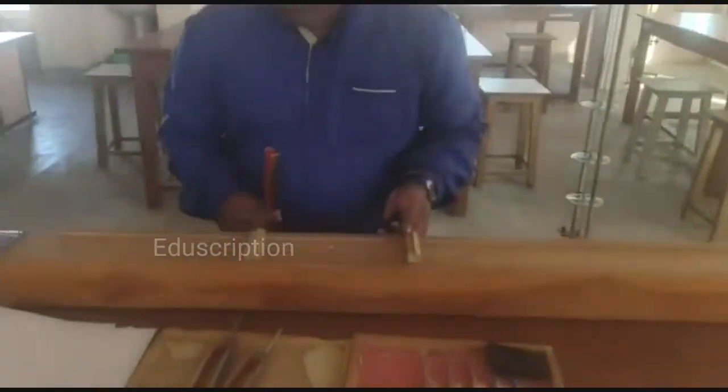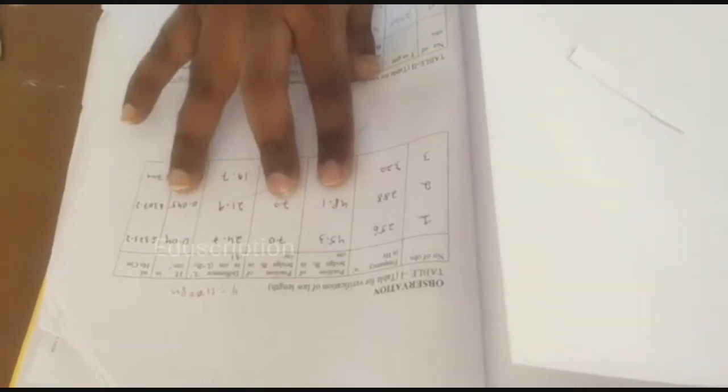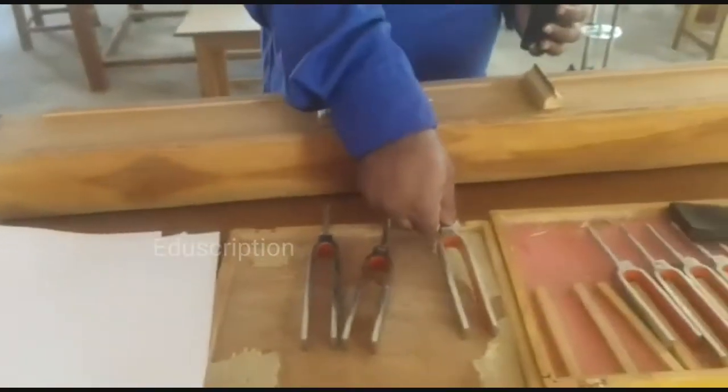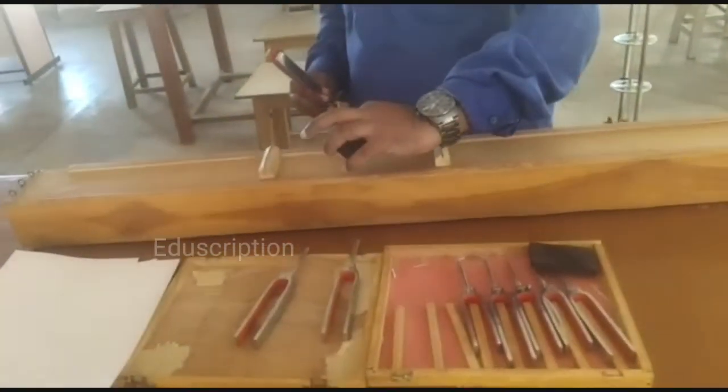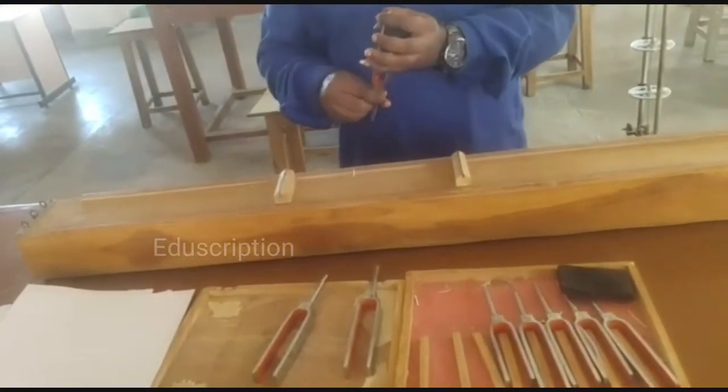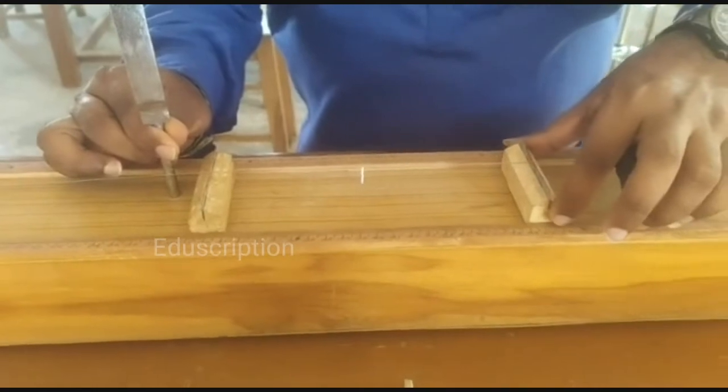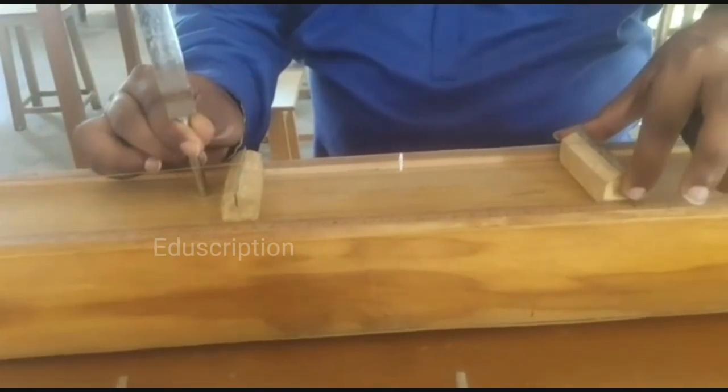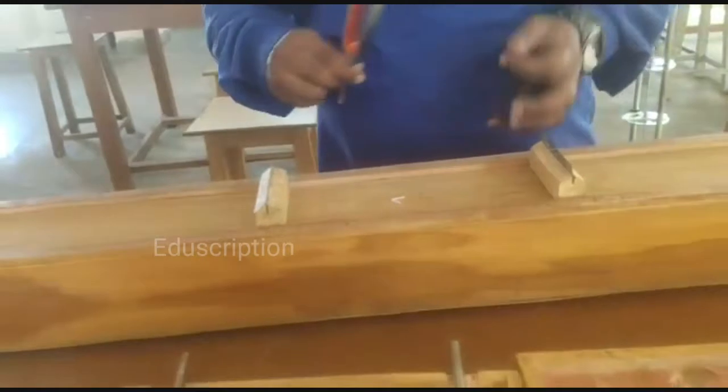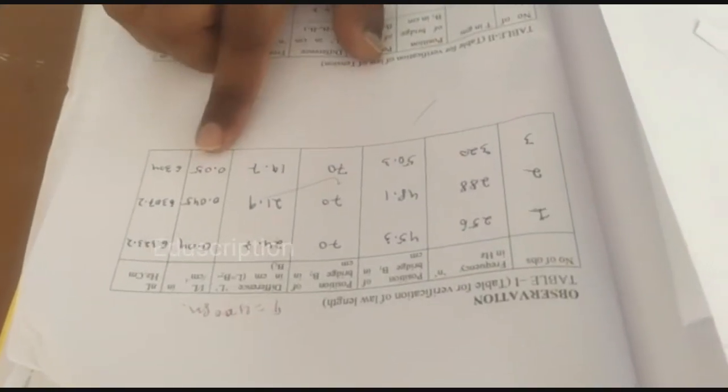Position for B1 is 48.1 and B2 also constant at 70, then we will find difference, then 1 by n, then n into L. Similarly find for 320 Hz.